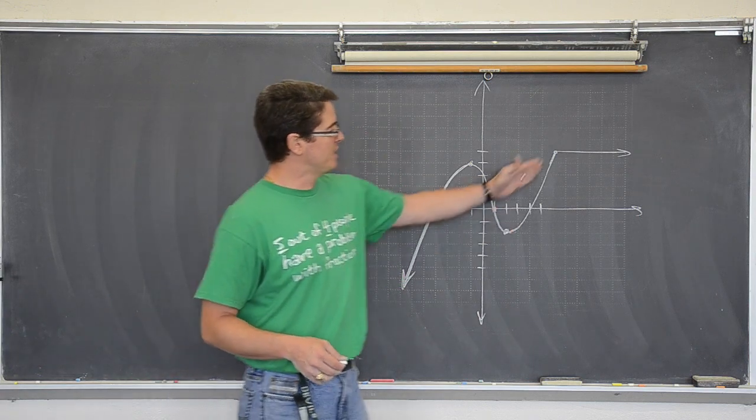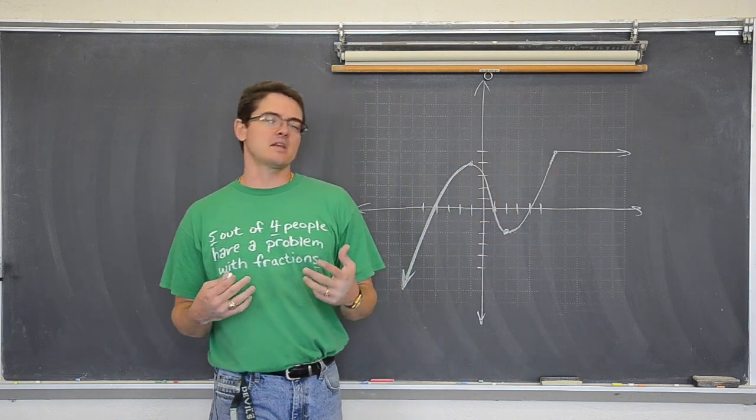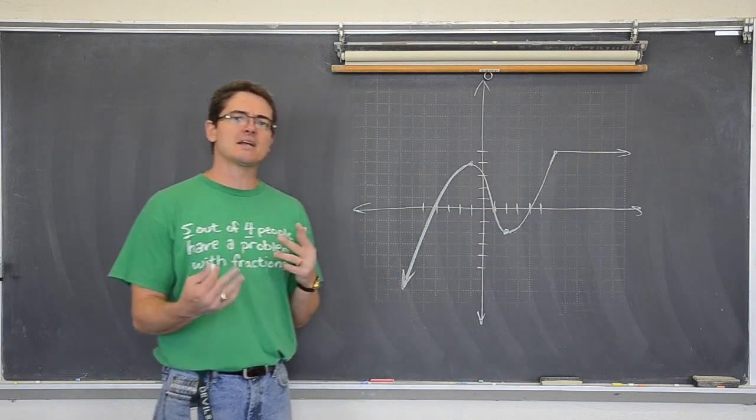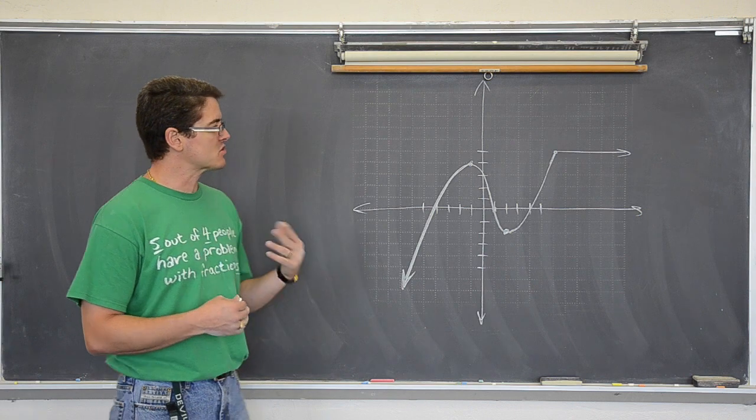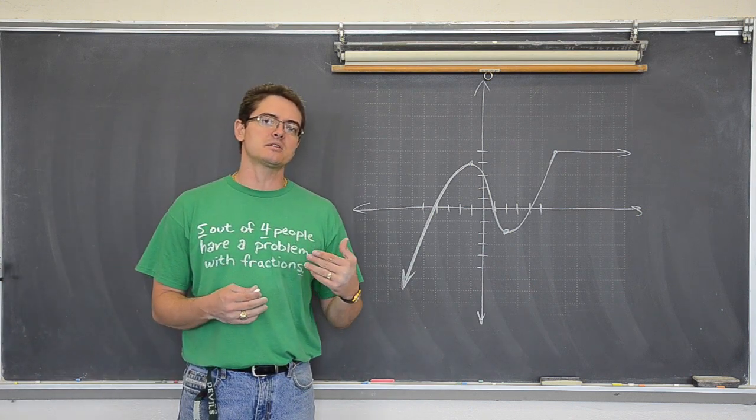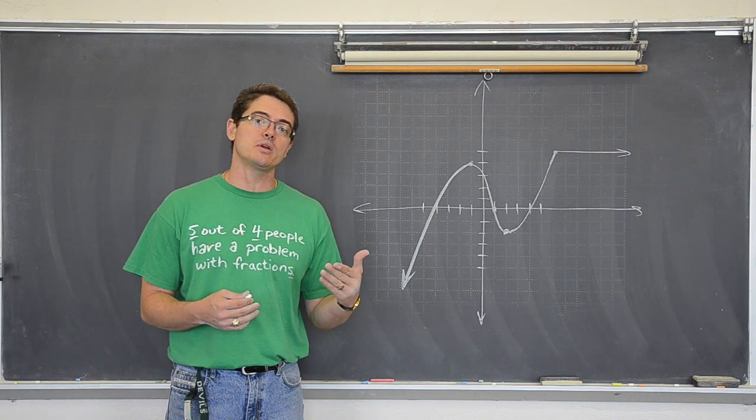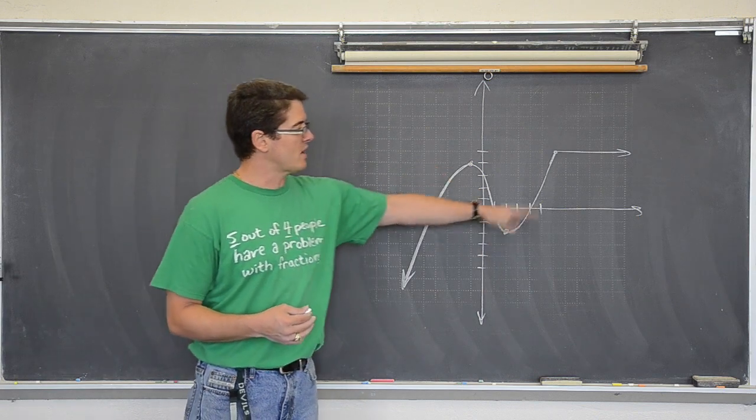I want to talk about how do we read graphs, analyze things like domain and range, relative max and mins, how do I describe where a graph is constant, increasing or decreasing, and really just pick this graph apart.